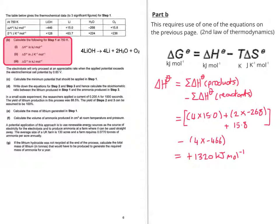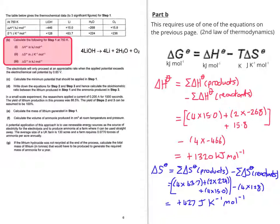So doing the same for delta S. You do the total of the products entropy and the total of the reactants entropy and take one away from the other. And that gives us plus 427 joules per Kelvin per mole.